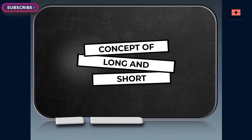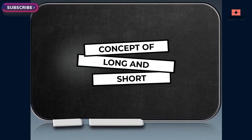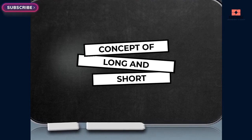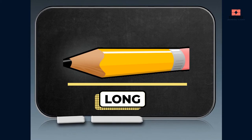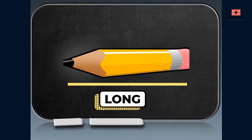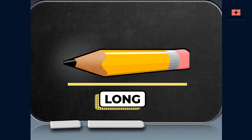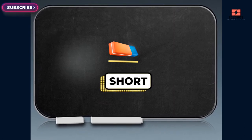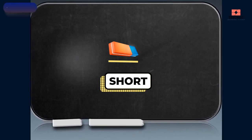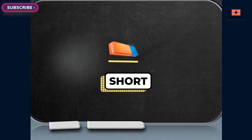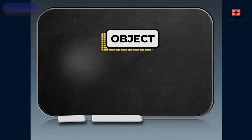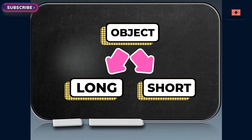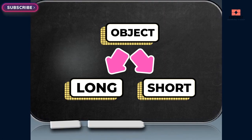Hi kids! Today we'll learn about the concept of long and short. So are you excited? Here we go. Long — a pencil is long in length. Short — an eraser is short in length. Objects can be classified as long and short based on their length.